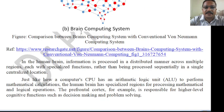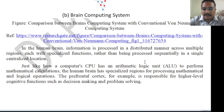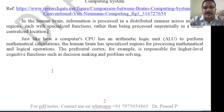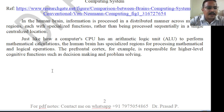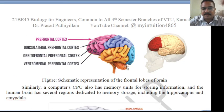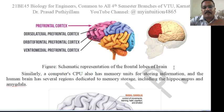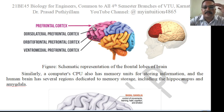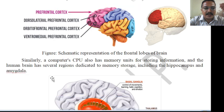Information in the brain is processed across multiple specialized regions, rather than sequentially in a single centralized location. Just as a CPU has an Arithmetic Logic Unit (ALU) to perform mathematical calculations, the human brain has specialized regions for mathematical and logical operations. The prefrontal cortex, for example, is responsible for higher-level cognitive functions such as decision-making. A schematic of the frontal lobes shows the prefrontal cortex, where numerous calculations take place.